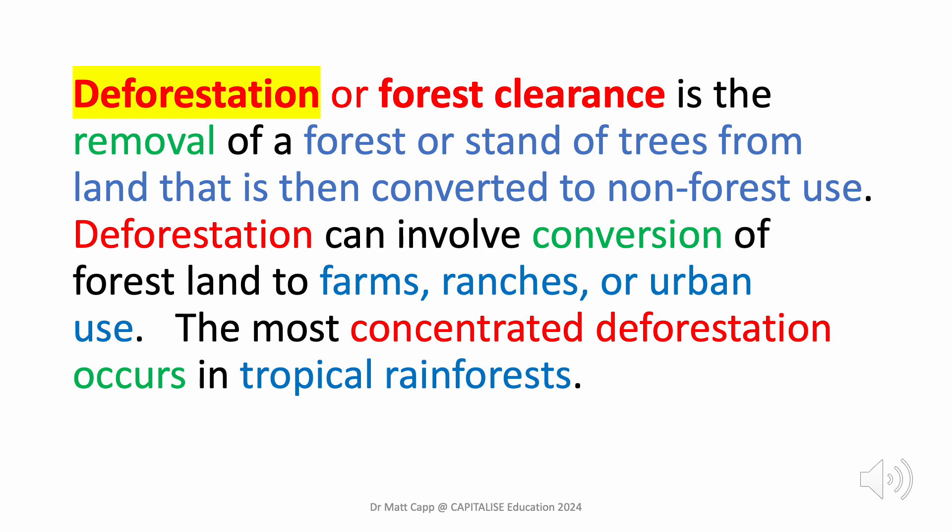Now that we've highlighted all the nouns, verbs and objects in different colours within the text, we read aloud the text again to the class, this time highlighting the key terminology — for example, deforestation, farm, ranches or urban use, and tropical rainforests.